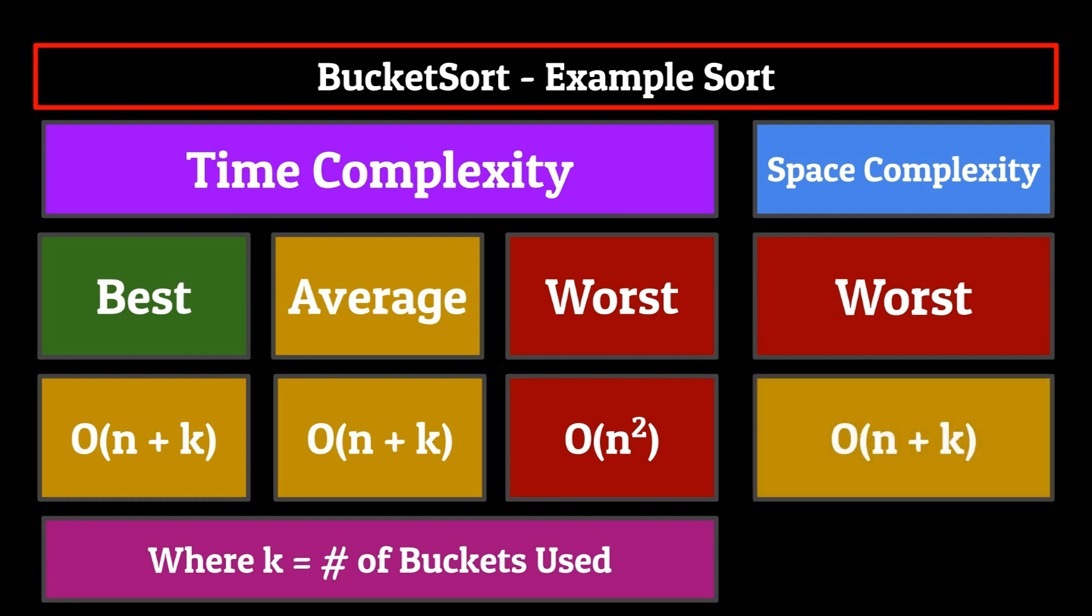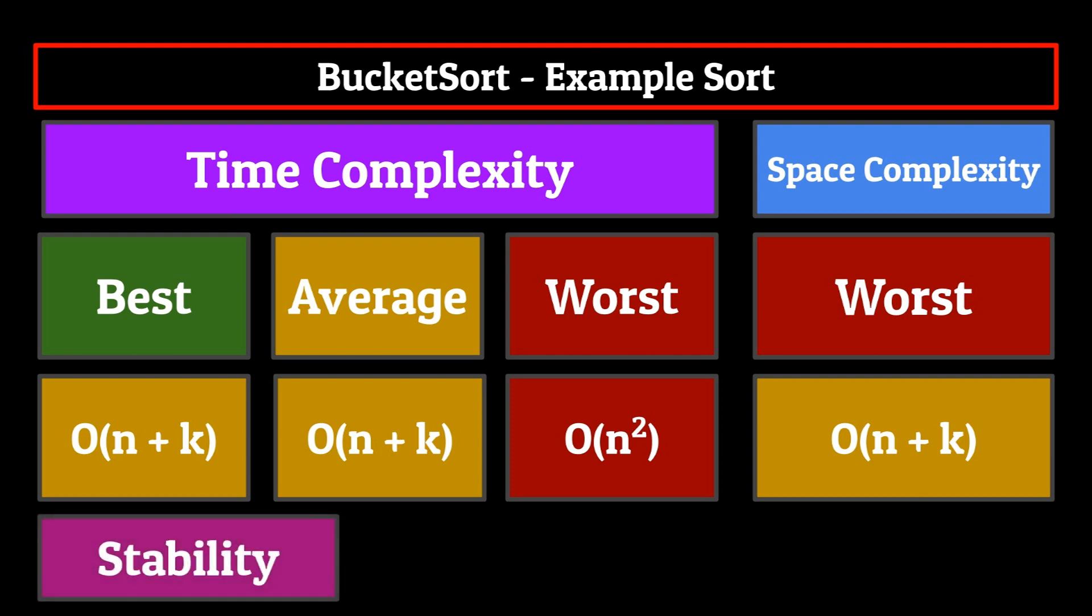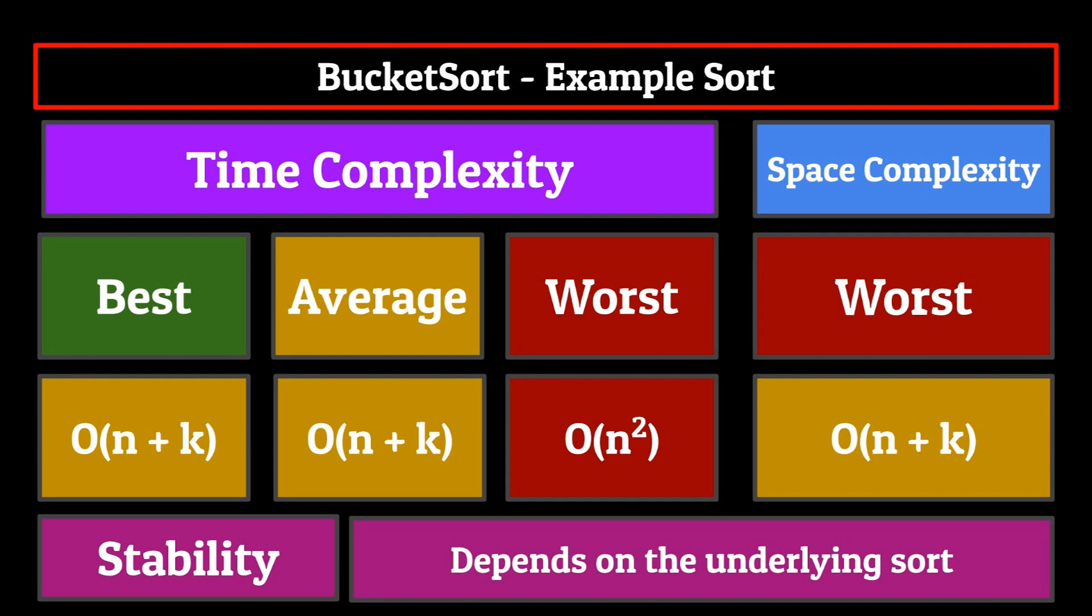The space complexity of bucket sort is O of n plus k. Since remember, we're defining lists for each bucket. These buckets are not in place, and so we need to spend extra space in memory. Finally, we have the stability of bucket sort. The stability is going to depend on whether or not the underlying sorting algorithm is stable.